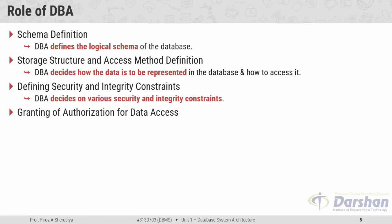The fourth role is granting authorization for data access. The DBA will determine which user needs access to which part of the database, and depending on that requirement, the DBA will grant permission so that the user can access only that specific part of the database.